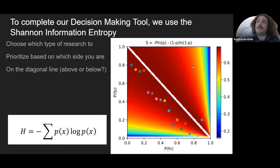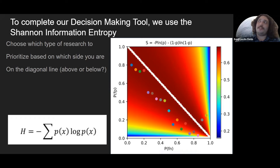Either you're going to want to prioritize an experiment that has no chance of a false negative — so you'd move leftwards toward the bottom left corner — or you're going to want to prioritize something that minimizes the probability of a false positive. In the case where you're under the diagonal line, the quickest thing you could do to get closer to that zero point would be to go vertically down. So you can use this as a mathematically based way to make your decision about what kind of experiment to prioritize when doing your follow-up mission.